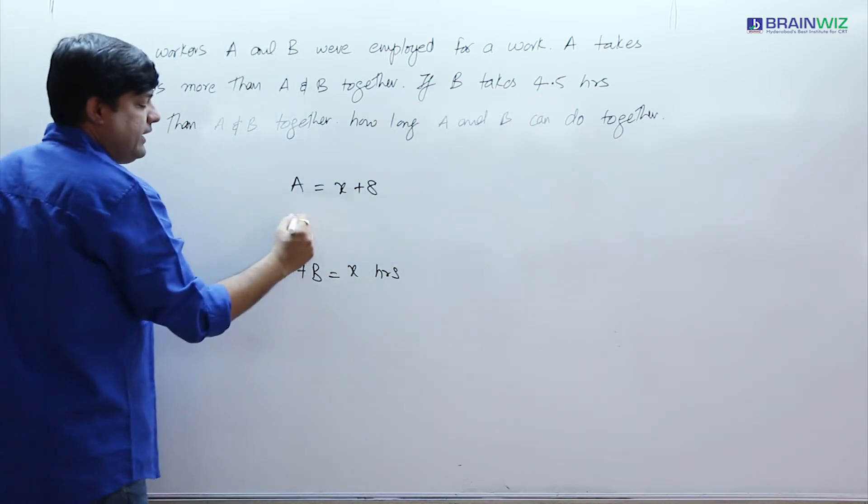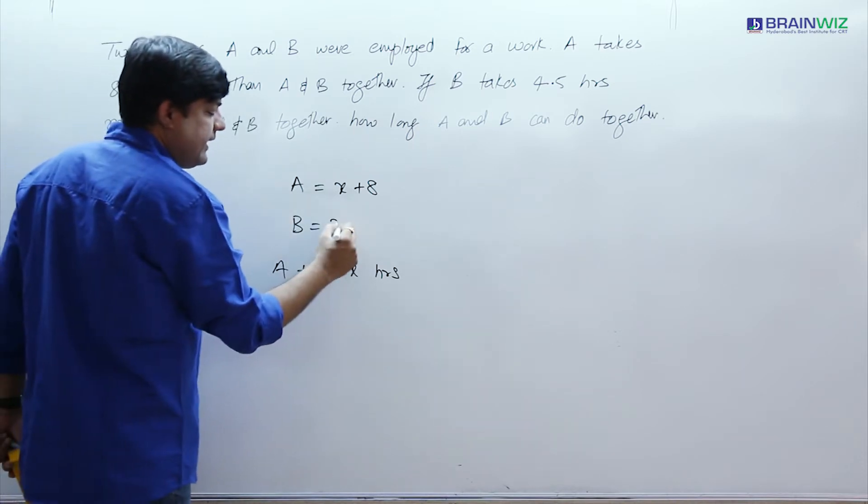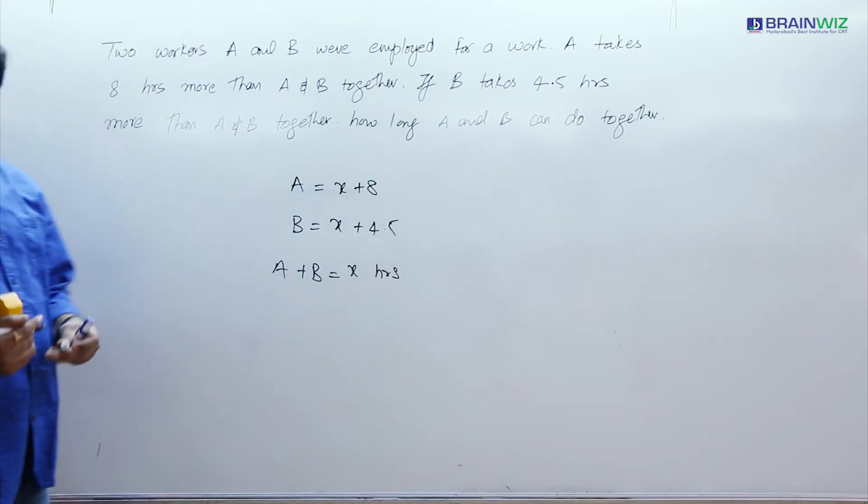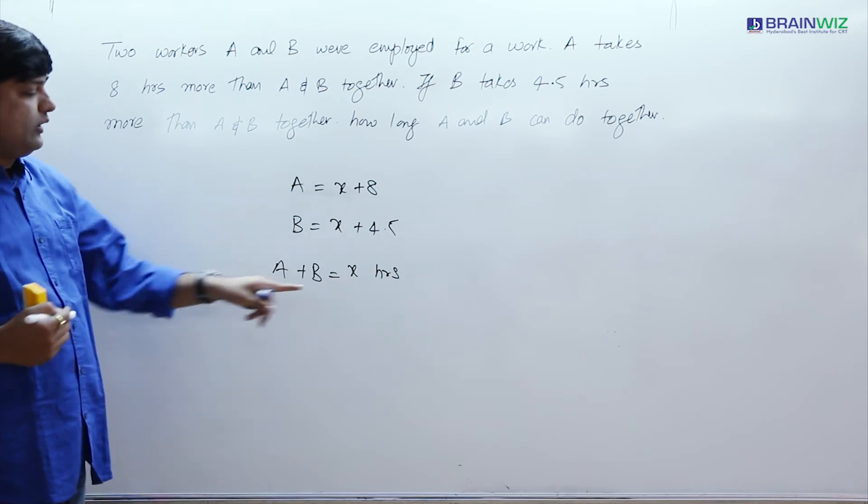Now we also have B. B takes 4.5 hours more than A and B together. A and B is X, he takes 4.5 more. Now we have to find out what is the value of this X.